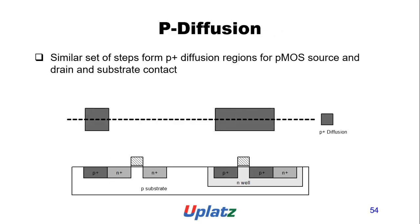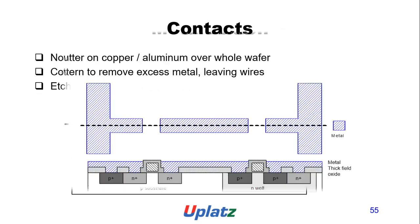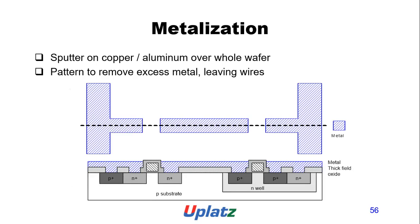P diffusion follows a similar set of steps for P-plus diffusion regions for PMOS source and drain and substrate contacts. For contacts, cover the chip with a thick field oxide, then etch the oxide where contact cuts are needed. Metalization: sputter copper or aluminum over the whole wafer, then pattern to remove excess metal, leaving the wires.